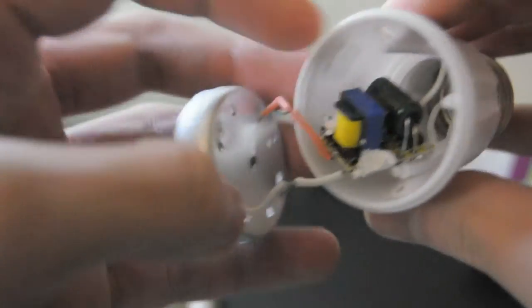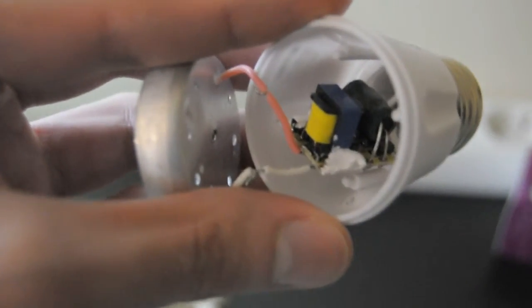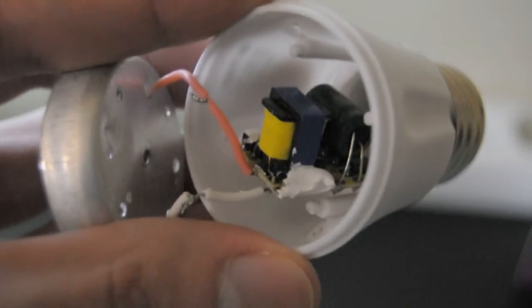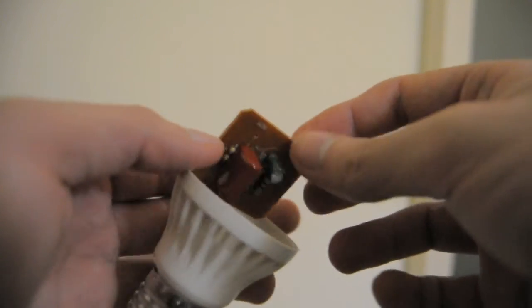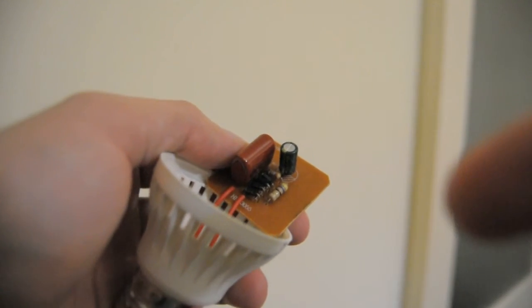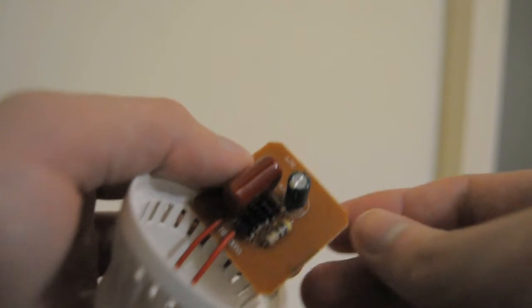The LED driver is the most significant part of the bulb. The good bulb has a transformer-based driver. The cheap bulb has no driver at all; it is powered by a bridge rectifier and a current limiting resistor.